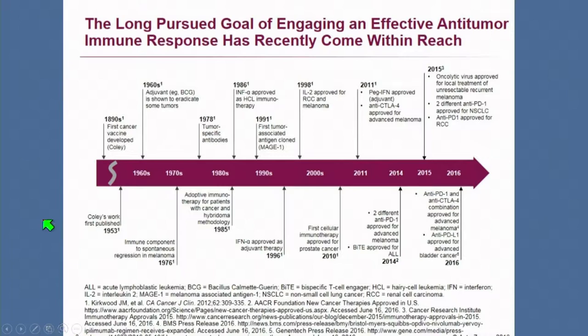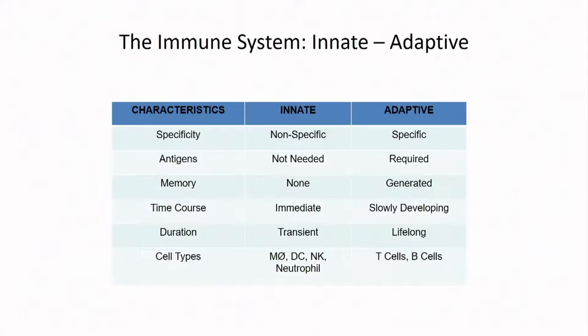Coley did his first work in the late 1800s, then there was a gap. In the 1960s, BCG was introduced. Rosenberg then did extensive work at NIH with interferon and IL-2. The first cellular immunotherapy approved for prostate cancer was Sipuleucel-T in April 2010. Since then, a number of different immunotherapies have been approved, and this number continues to increase.